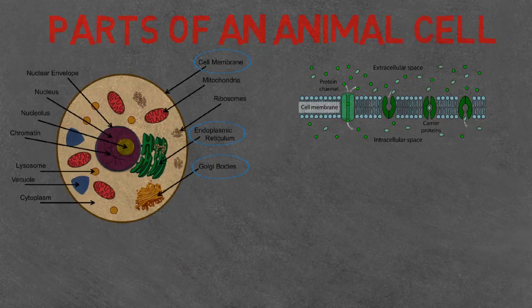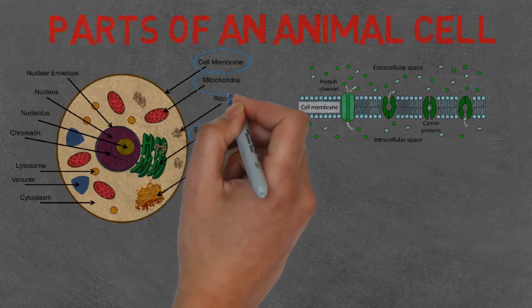Next, we've got the Golgi body. This receives transport vesicles from the endoplasmic reticulum, sorts, tags, and packages proteins and lipids in vesicles.